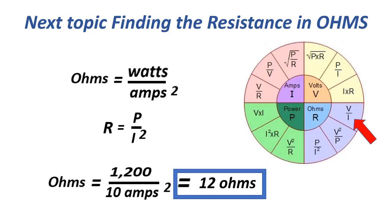The next resistance formula: ohms equals watts over amperes squared, or R equals P over I squared, equals 1,200 over 10 squared — or 100 — equals 12 ohms.